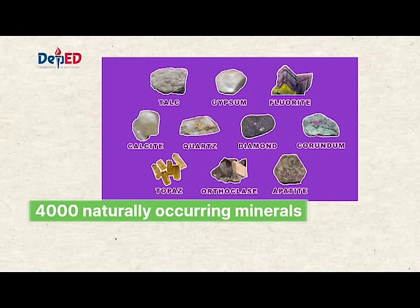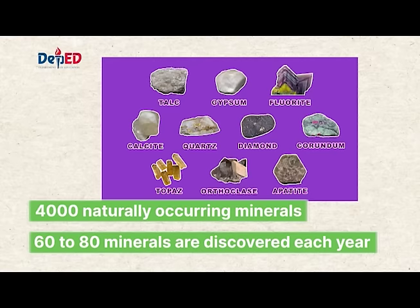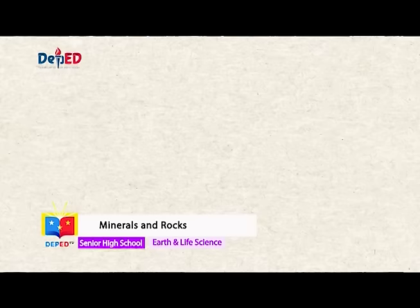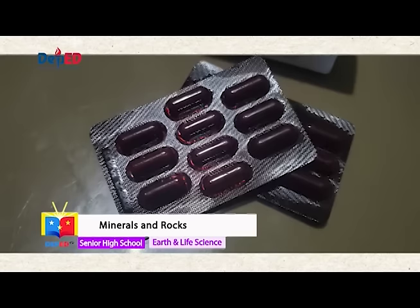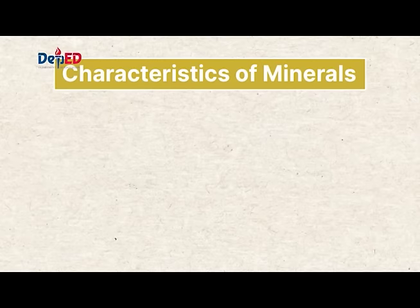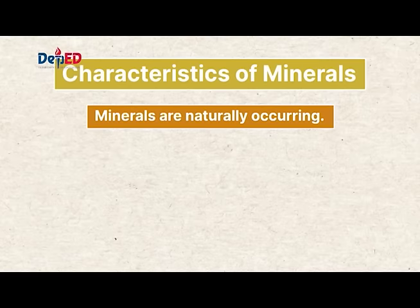With this number, how can we determine whether a material is classified as mineral or not? The word mineral may mean differently to different people. Some may associate it with gemstones, rocks, and geology, or even vitamin pills. To a geologist, however, a mineral must have all of the following characteristics. First, minerals are naturally occurring. It means that it cannot be man-made, manufactured, or created in a laboratory. It is a product of earth's natural processes.